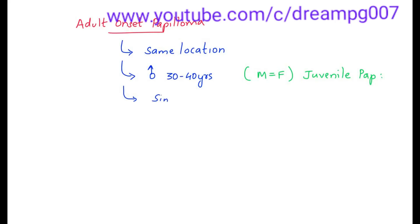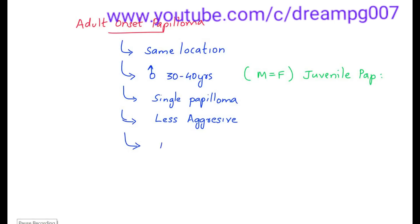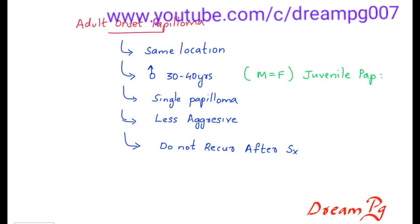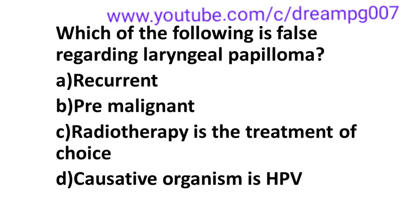Adult onset papilloma occurs as a single papilloma and is less aggressive. It does not recur after surgery, whereas juvenile papilloma has a higher chance of recurrence after surgical removal. So the answer to the question — radiotherapy is the treatment of choice — is false.